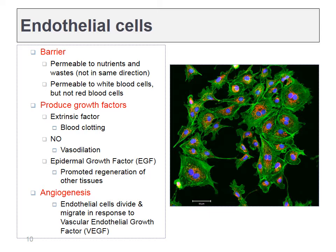Endothelial cells also produce a number of important hormones. One of the most important ones today is nitric oxide, which leads to vasodilation in tissues that are hypoxic. In the next chapter, we'll talk about their role in blood clotting. Endothelial cells can also produce a growth factor that helps promote the growth of other tissues that have been damaged. Lastly, endothelial cells are involved in the very important process of angiogenesis — the growth of new blood vessels — and they can migrate and create new capillaries if given the signal VEGF.